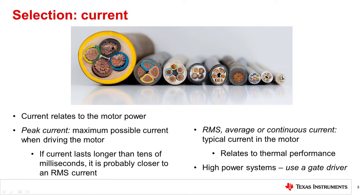RMS current, which is also called average or continuous current, is the nominal current of the motor. The power dissipation in the motor driver is largely determined by this RMS current. Be careful if this parameter is specified — the amount of RMS current that a part can actually drive will be very dependent on the thermal characteristics of the circuit board and system, including the copper thickness, the number of layers, the layout pattern, and the presence of airflow. If you are designing a high power system, it may be difficult or impossible to find a motor driver to meet your current output needs, which means you need to use a gate driver.